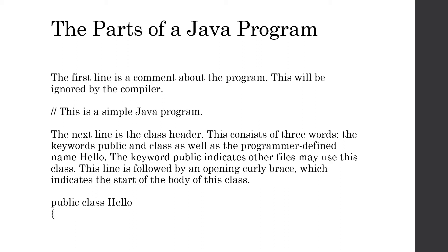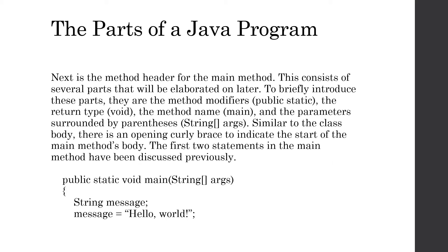The line that follows the class header is going to be an opening curly brace, meant to indicate that we are at the start of the body of this class. Going into the body of the class, the next part we're going to have is the method header for the main method. Just like our classes, the main method also has two parts: a header and a body.